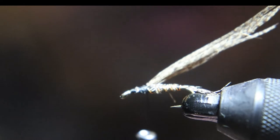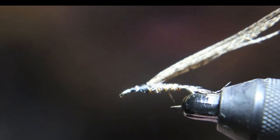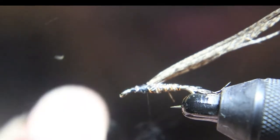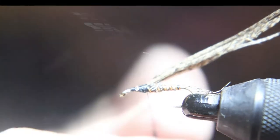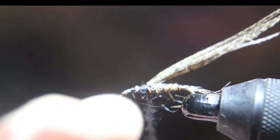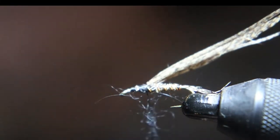Now we're going to dub underneath there, underneath the shell over or the thorax. We're going to dub it, but I just use regular black dubbing. You can also use peacock under there. That works pretty good too.